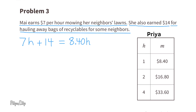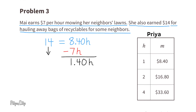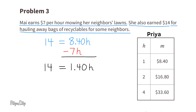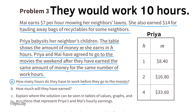Subtract 7H from both sides, which leaves 14 equals 1.40H. Divide both sides by 1.40, and that leaves 10 equals H. They would work 10 hours before they would have earned the same amount of money for the same number of work hours.